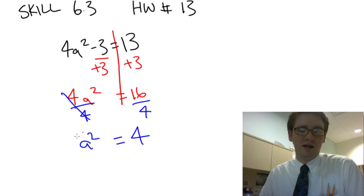This now looks like the very first problem we solved. To solve this, I need to do the square root on both sides because the inverse operation of squared is the square root. These cancel. I'm left with a = ±4.